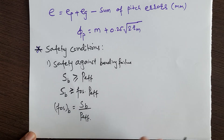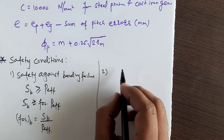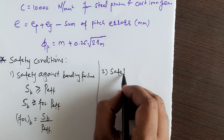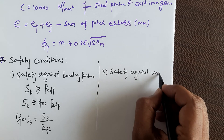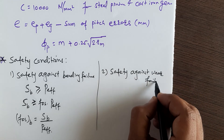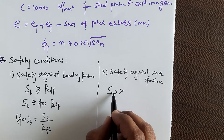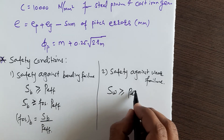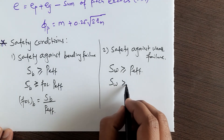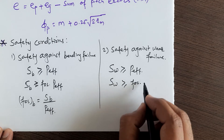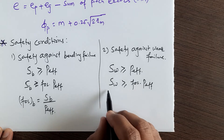From this formula you can find the factor of safety against bending failure. The second safety condition is safety against wear failure. To avoid wear failure, the wear strength SW should be greater than or equal to P effective, or if introducing a factor of safety, greater than or equal to the factor of safety into P effective.